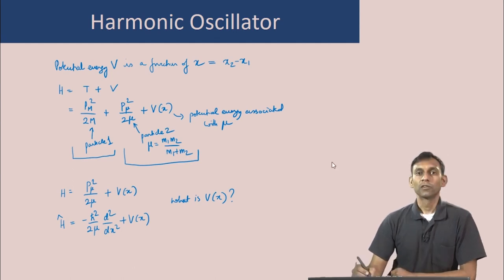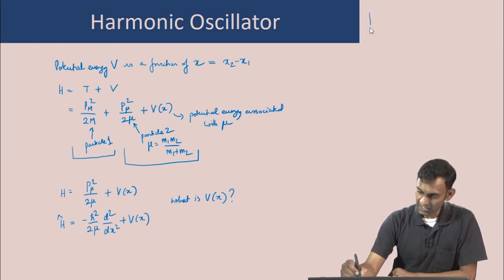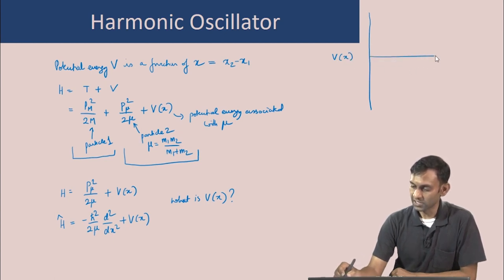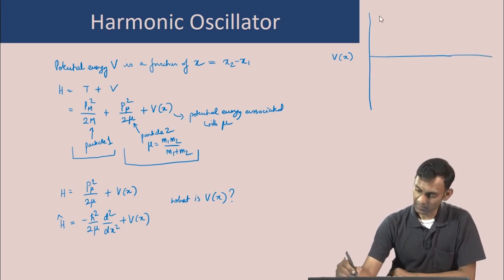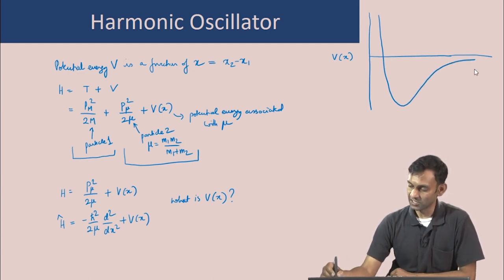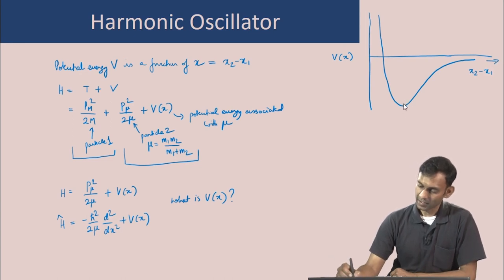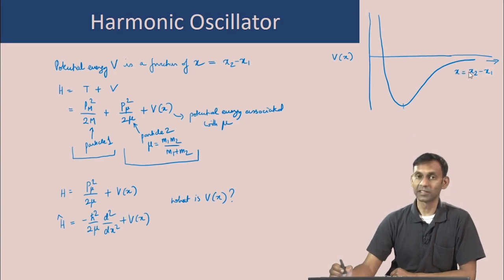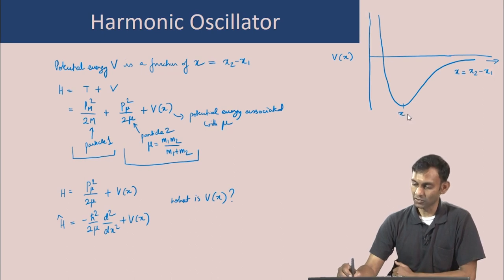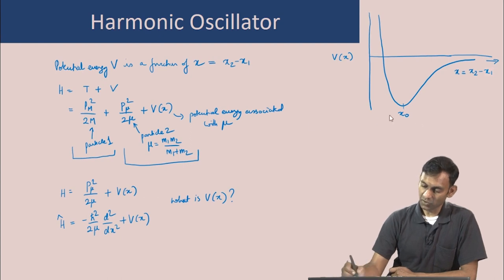The question is: what is V(x)? For a typical diatomic molecule, the potential energy V(x) as a function of the distance between the two atoms looks like a curve with a minimum. The x-axis is the distance between the two atoms, which we call x, the relative coordinate. The value at which the energy is lowest is the equilibrium geometry of the diatomic molecule, denoted x₀.